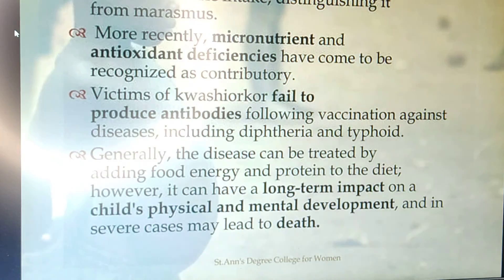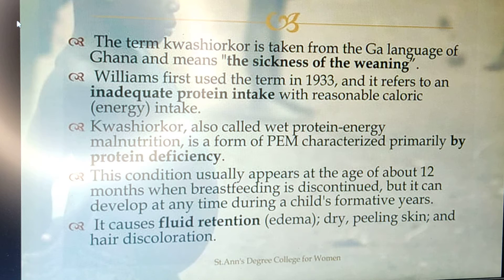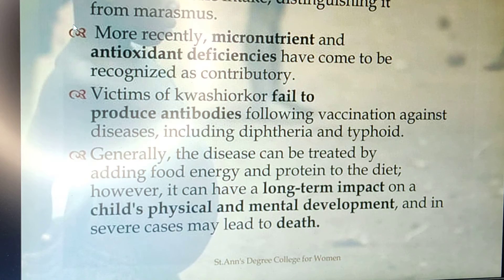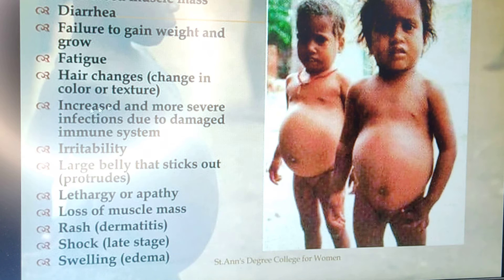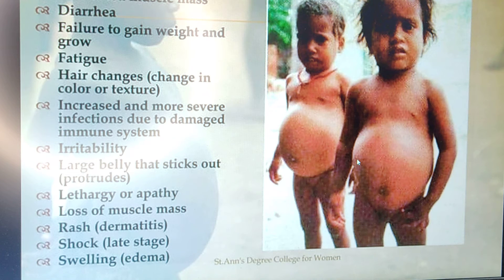Kwashiorkor is a protein and calorie deficiency and is one type of protein energy malnutrition. The symptoms of a kwashiorkor child, as seen in this picture, include changes in skin pigmentation, decreased muscle mass, diarrhea, failure to gain weight and growth failure, hair changes in color and texture, irritability, excessive crying, drowsiness, lethargy, abdominal distension with a large belly, loss of muscle mass, dermatitis, and in later stages, shock, edema, hepatomegaly, and splenomegaly.